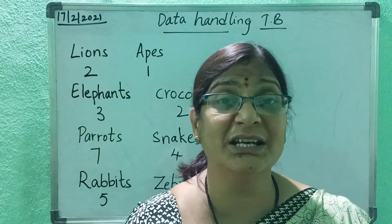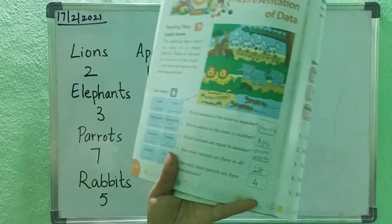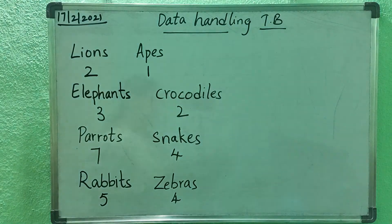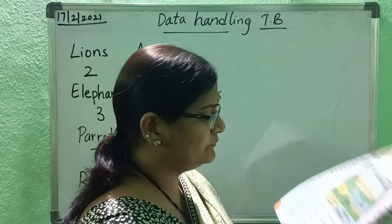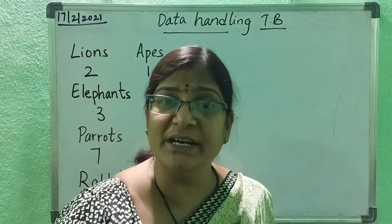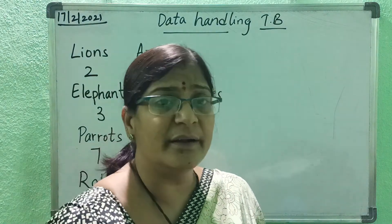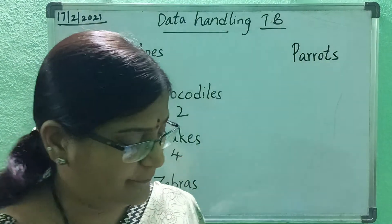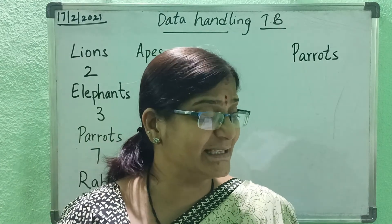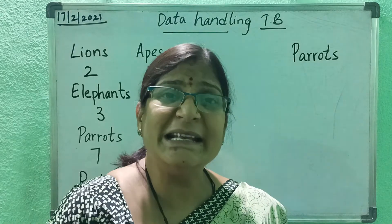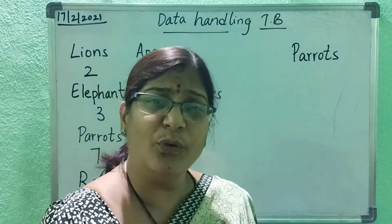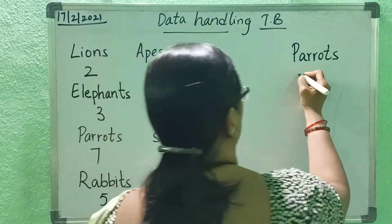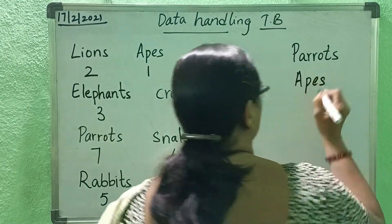Now you have to answer the questions. First one: which animal is most in number? Parrots. Next: which animal is the least in number? Least means very few — last in number. Apes — only one.